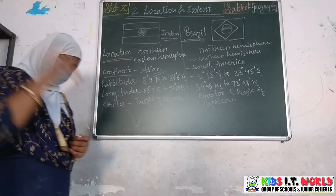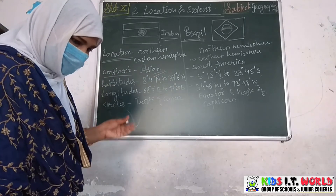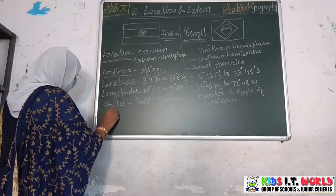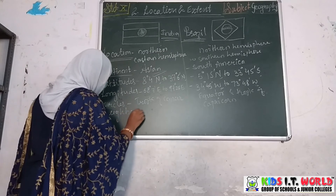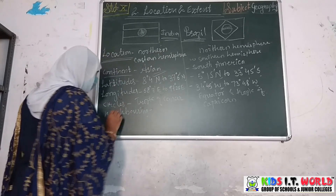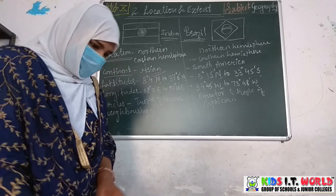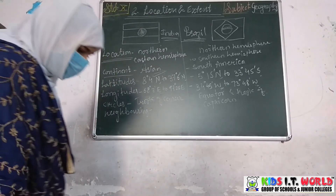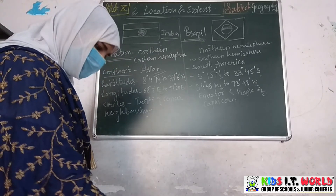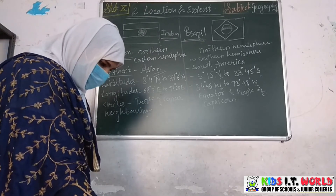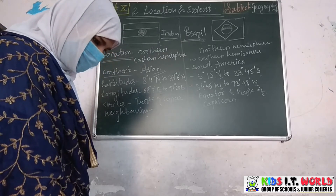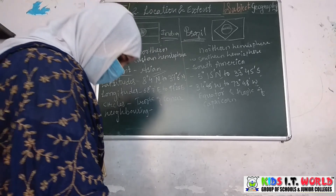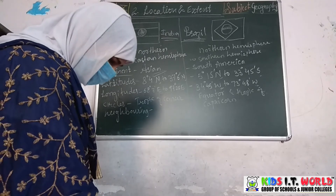The location and extent of Brazil is given in the textbook. Now we will talk about the neighboring countries of India. To the East: Bangladesh and Myanmar. To the North: Afghanistan, Nepal, and Bhutan. As seen on page number 10, the names of neighboring countries are also given on the political map. To the West: Pakistan and Afghanistan. To the South: Sri Lanka and Indonesia.